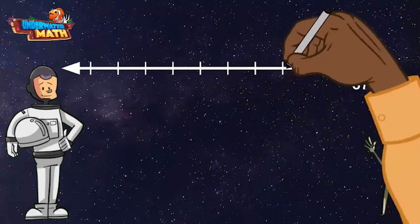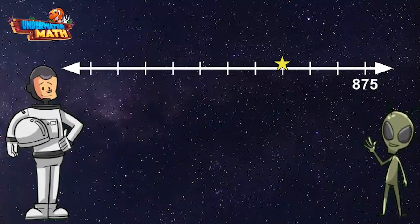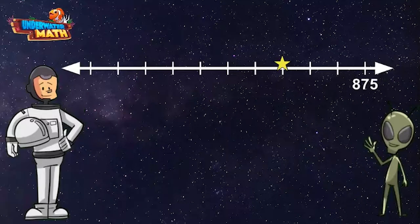Wait a minute Lenny, this number line only shows one number. Oh man, okay we've got this. Since the number is at the end of the number line, I know I need to count backward until we reach the star.